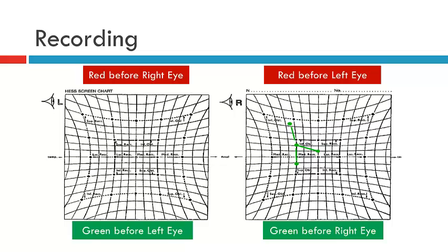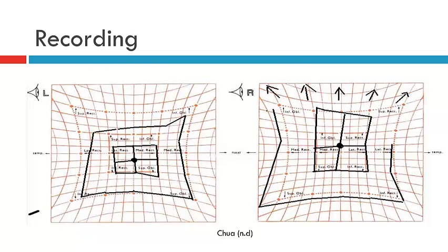The 15 degree inner field is always plotted, and the 30 degree outer field can also be plotted if needed. The 30 degree outer field is usually required when there are very subtle underactions and overactions, as taking the patient into more extreme gaze helps pick up those smaller deviations. Here is an example of a completed HES chart showing the plotting of the right and left eye, where underactions and overactions can be observed.